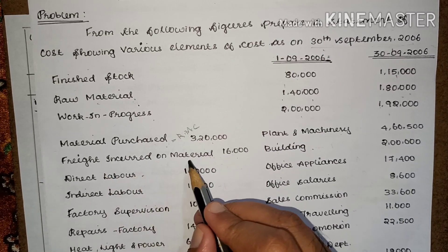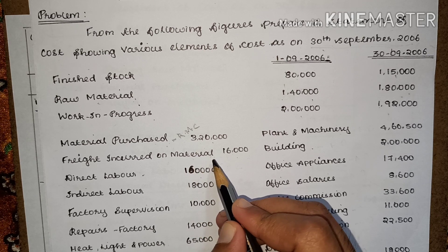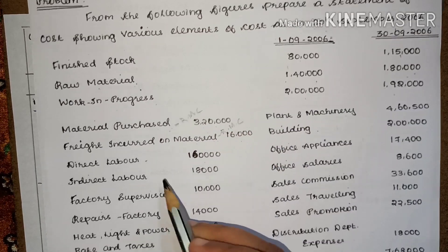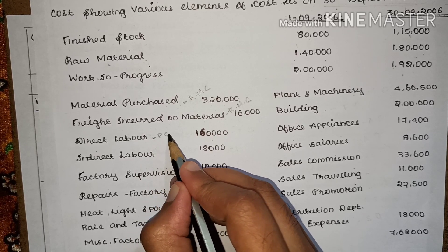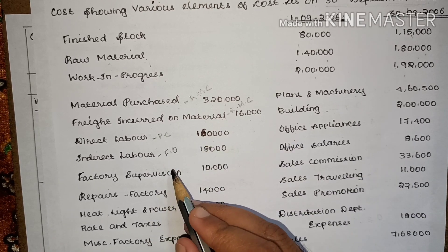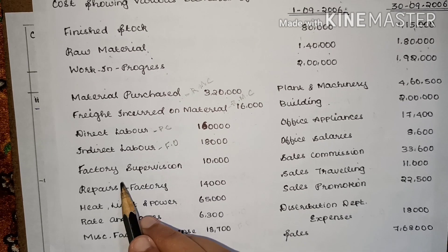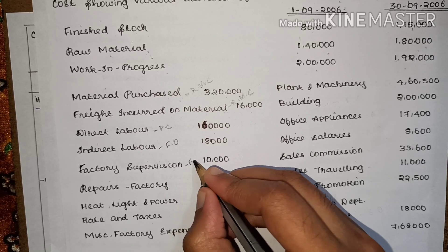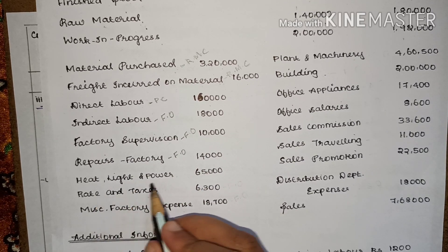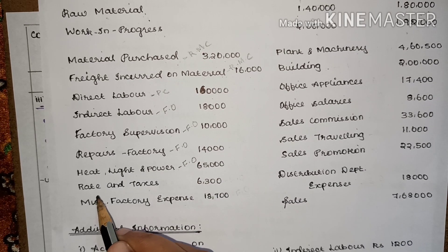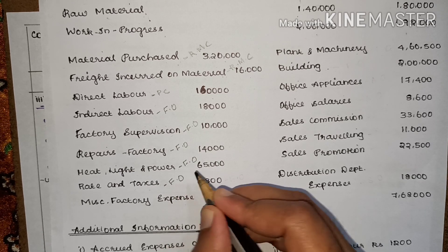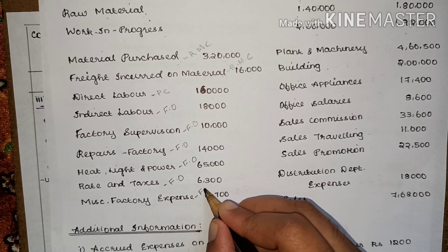Freight incurred on material is also an item to be added to the opening raw material, so this also comes under raw material consumed. Next is direct labor, which will come under the calculation of prime cost. Indirect labor comes under factory overheads. Factory supervision — factory overheads. Repairs of factory — factory overheads. Heat, light and power — factory overheads. Rate and taxes — unless there is additional information, take it under factory overheads.